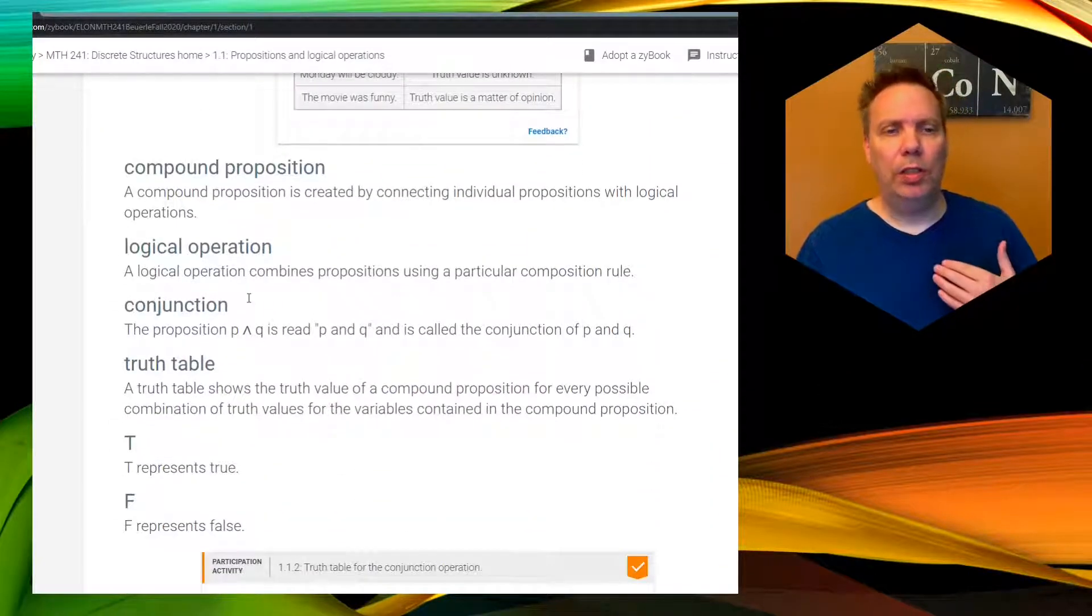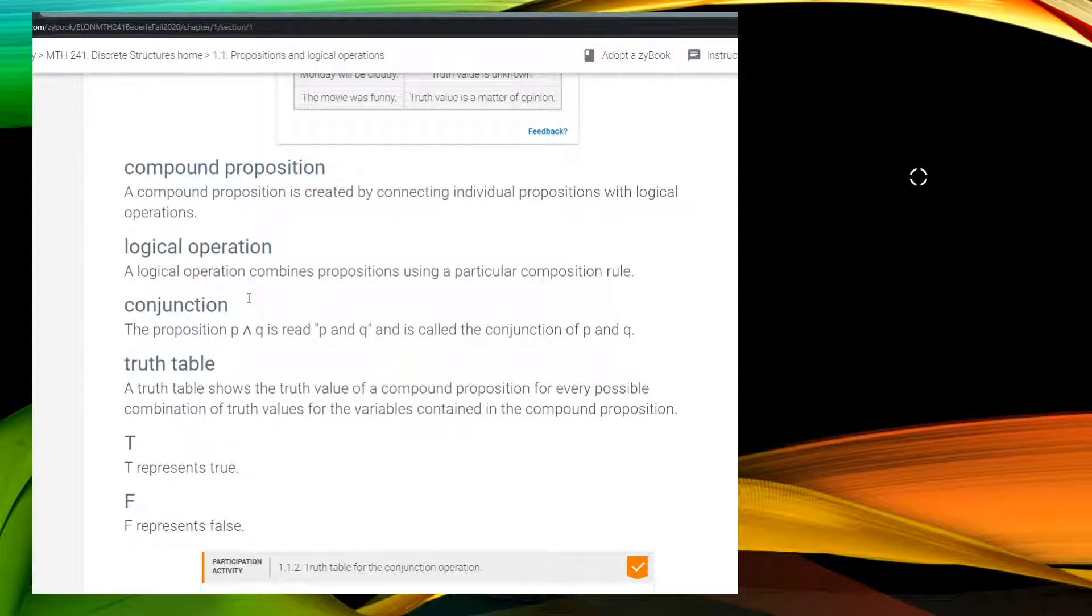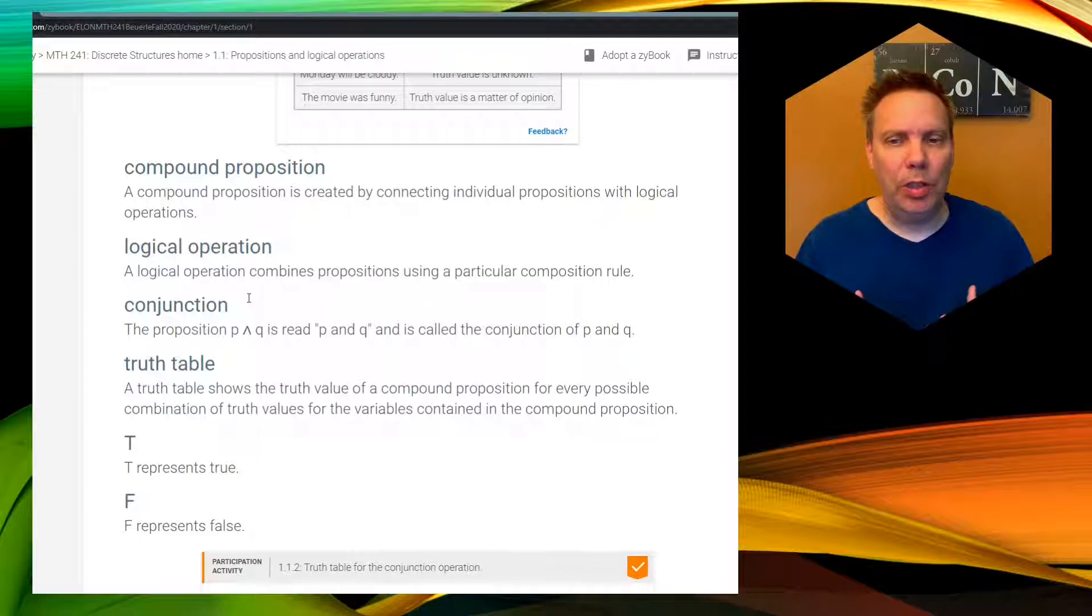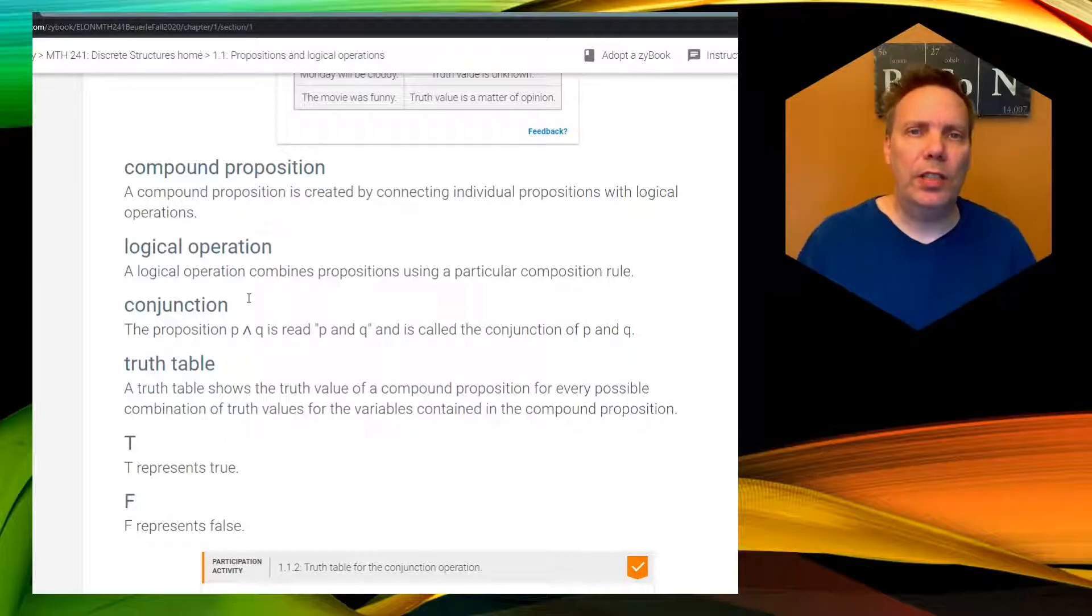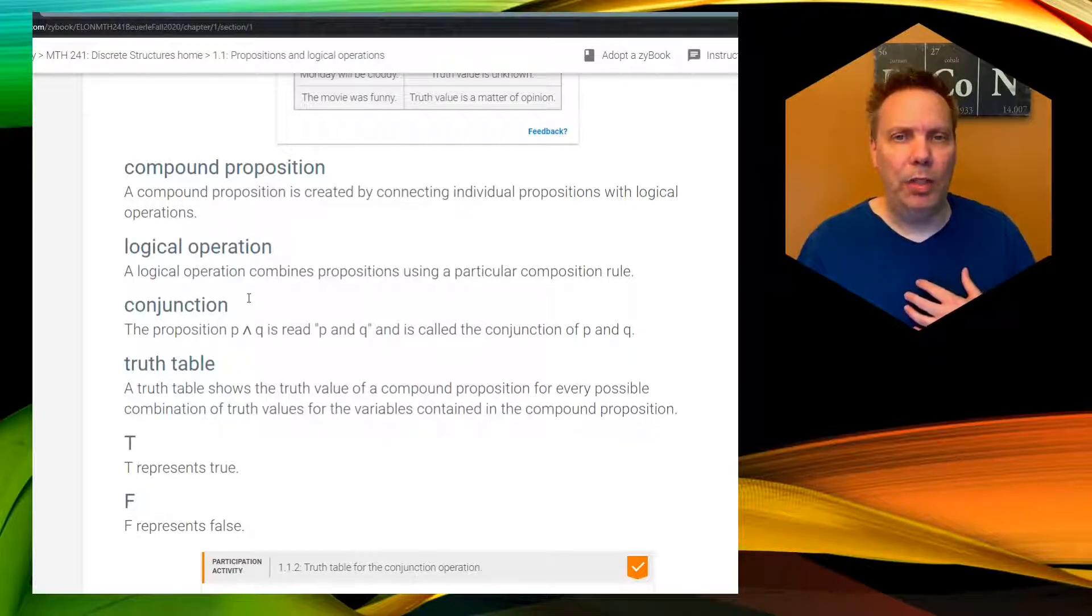So when we talk about a conjunction, we're talking about an and statement. An and is true only if both of the two propositions are true. So a conjunction forms a compound proposition. And in order to organize all this, we talk about something called the truth table. And I will do some handwritten work and generate some truth tables for you.